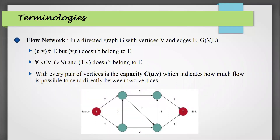Before moving to the Ford-Fulkerson method and Edmonds-Karp algorithm, let's look at different terms we are going to use. First is flow network: a flow network is a directed graph that has a source s and a sink t, where if (u,v) belongs to E then (v,u) does not belong to E — meaning the flow is in one direction. There are special vertices: source s where the flow network starts, and sink t where it terminates. All other nodes are called internals.